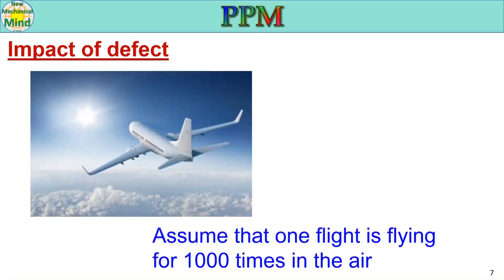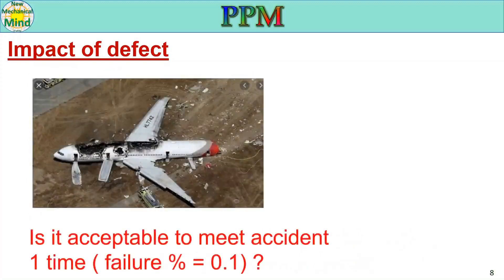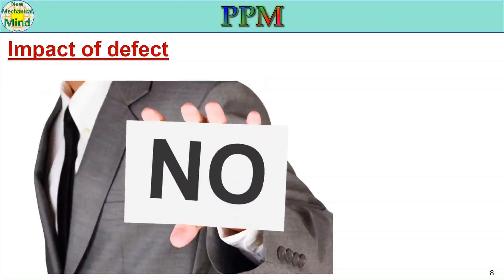Impact of defect: assume that one flight is flying one thousand times. Is it acceptable to have an accident one time? That means a failure percentage of 0.1%. Is it okay? No, because the casualty and impact will be severe. This illustrates why even a seemingly small rejection rate is unacceptable in high-stakes scenarios.